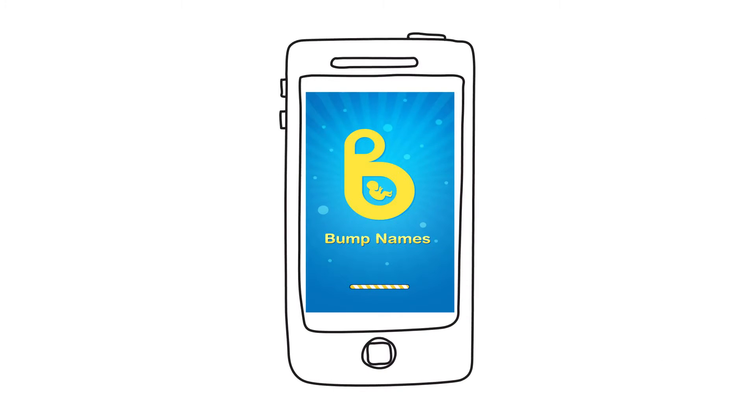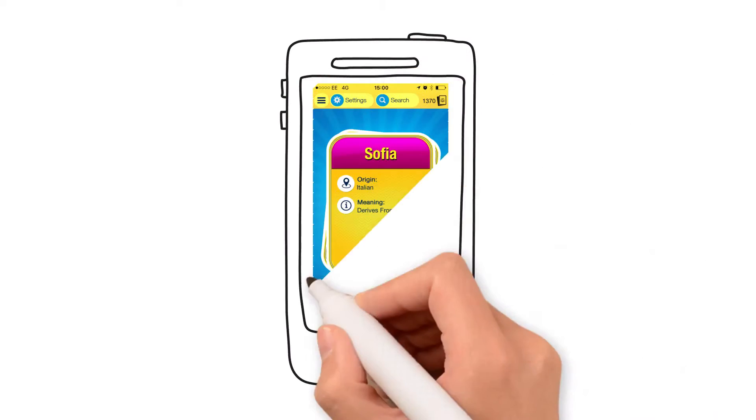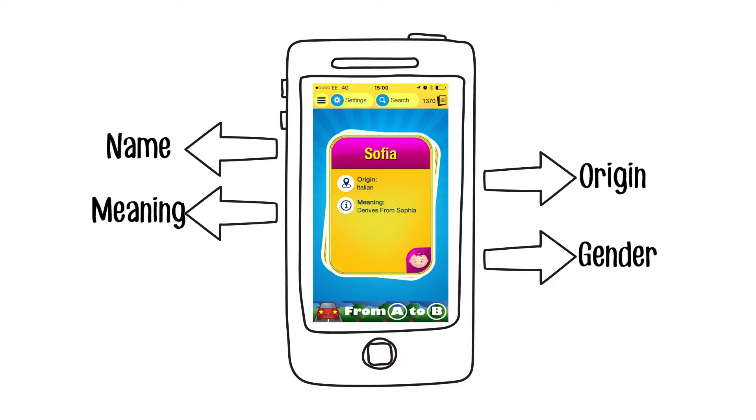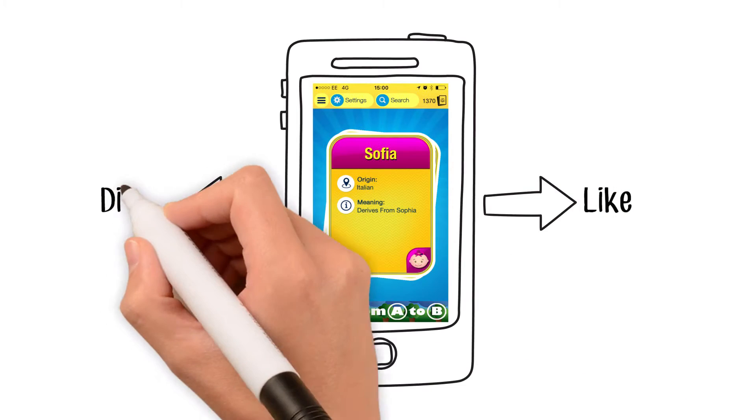Bump Names is the perfect solution for you. You get presented with one name at a time, along with the origin, meaning, and gender, allowing you to swipe right if you like the name or swipe left if you don't.